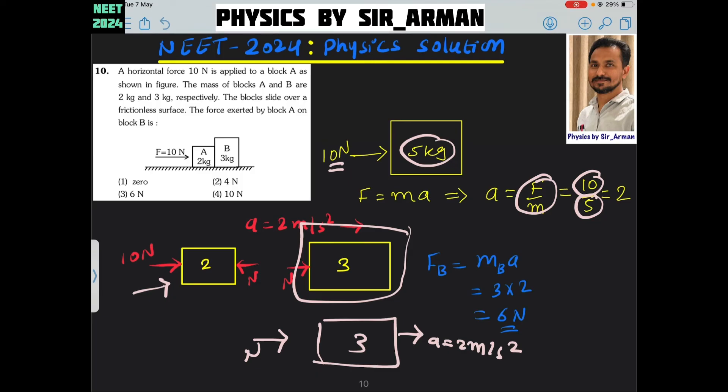From Newton's second law, force equals mass times acceleration. Mass of the second block is 3, acceleration is 2, means 6 Newton force is acting on the second block and this force is provided by the first block. Therefore, the force exerted by block A on block B is 6 Newton.